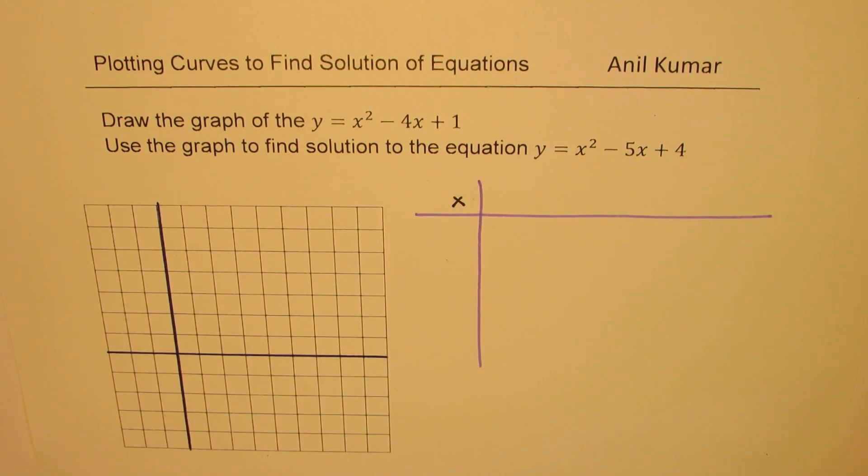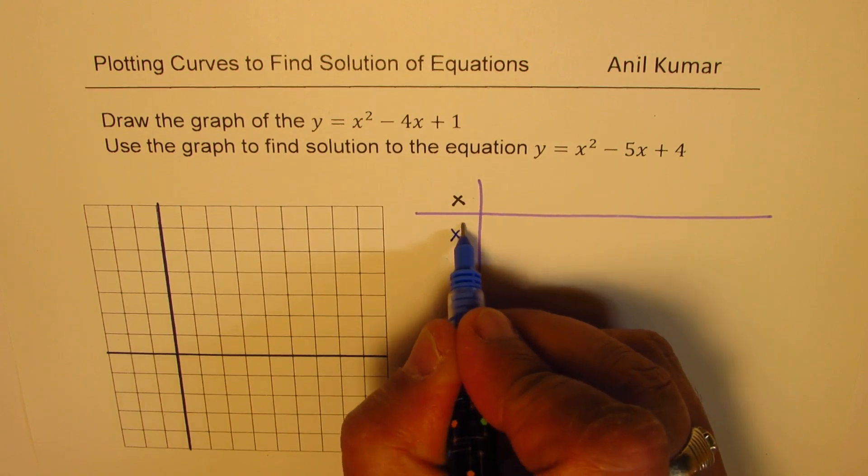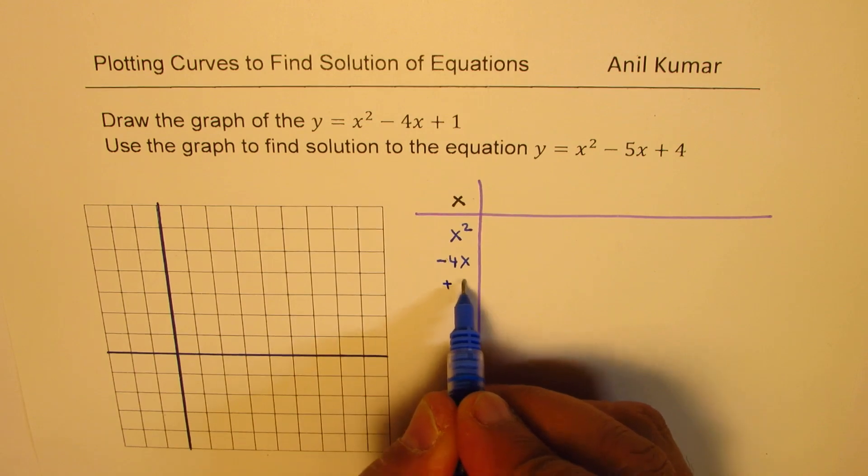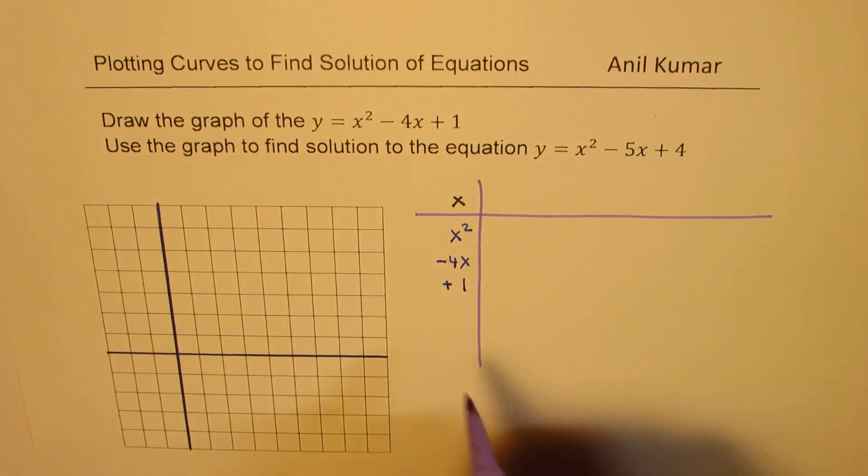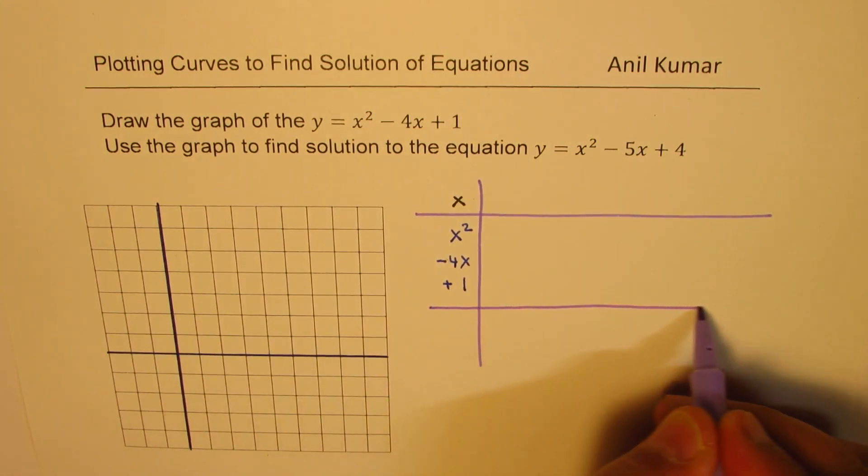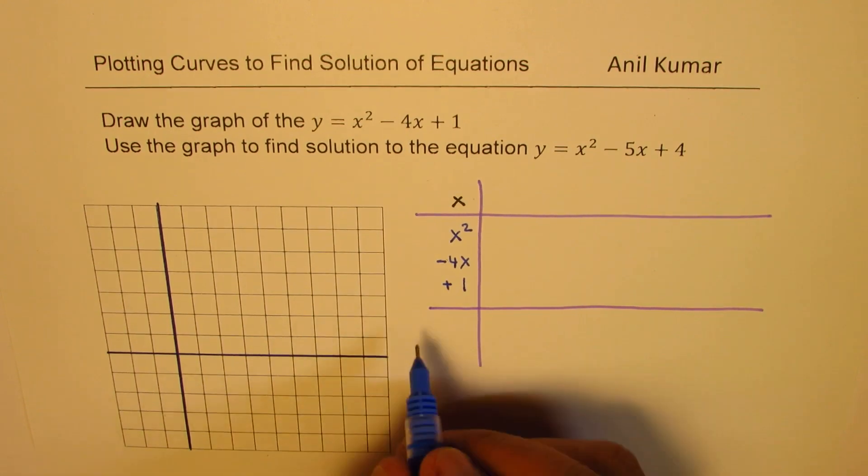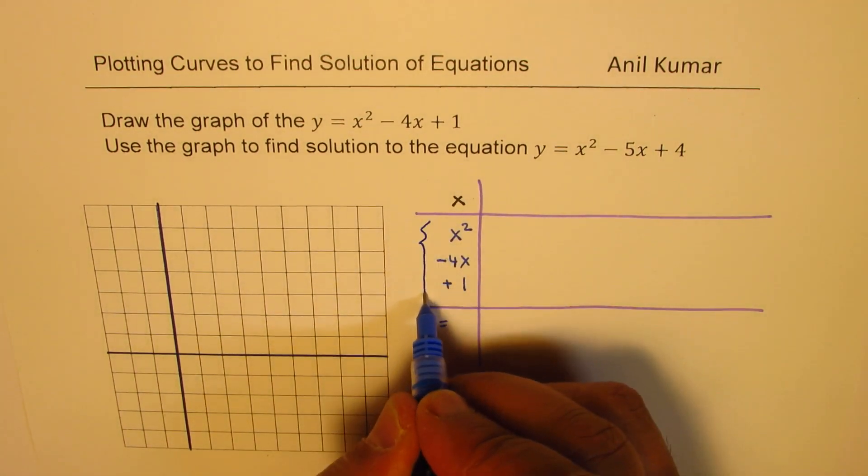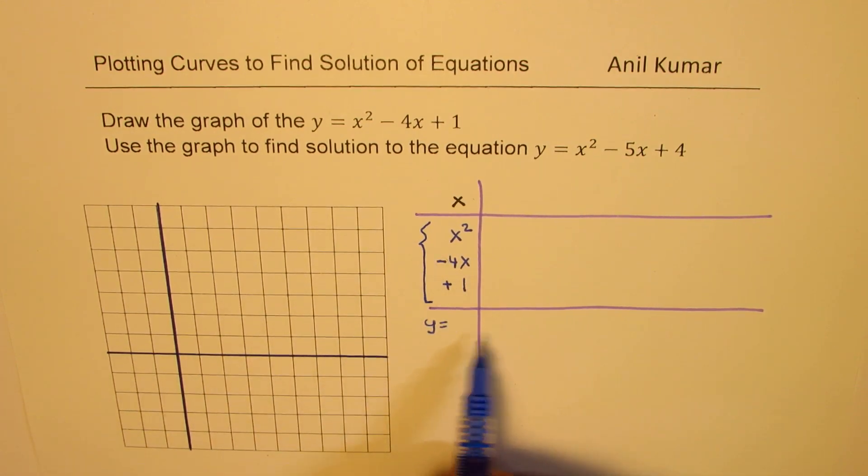So in a sequence we'll write down these numbers. We'll calculate what is x squared, and then what is minus 4x, and then we are going to add 1. So once you do all this you get the value of y. So then you get y equals the sum of these numbers.